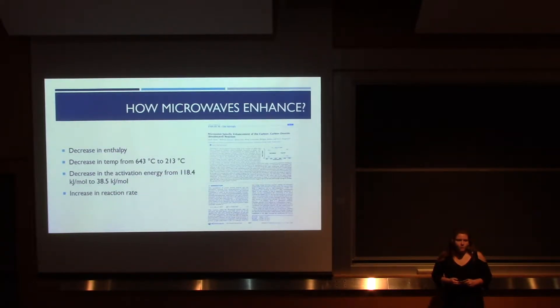However, a research group from Florida State found that with the addition of microwaves, the enthalpy of the reaction dramatically decreased. This allowed for carbon monoxide to start being formed at about 213 degrees Celsius rather than 700. There was also a decrease in the activation energy of the reaction, which increases the reaction rate, allowing for carbon monoxide to be created at a much faster pace.